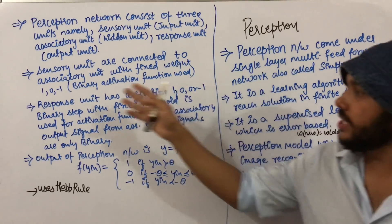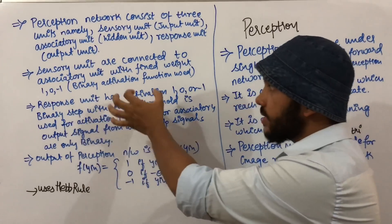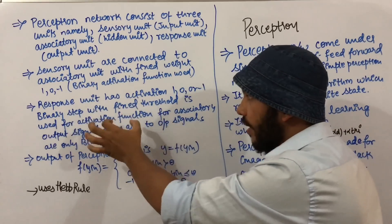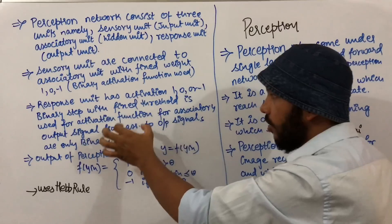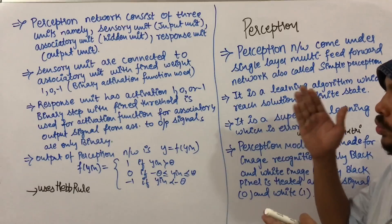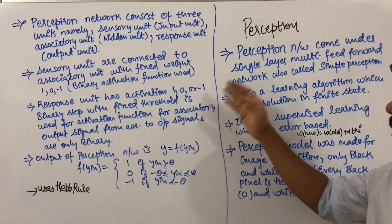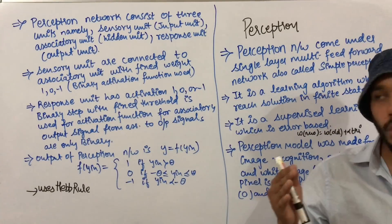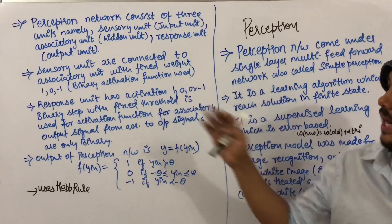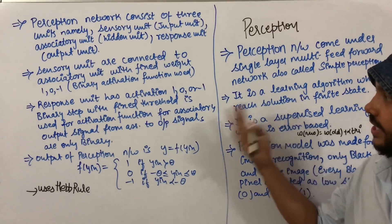This perceptron model also supports bipolar values: one, zero, and minus one. The response unit has activation values of one, zero, or minus one. A binary step function with a fixed threshold is used as the activation function for the associatory output signal. Signals from the associatory unit to the response unit are binary.